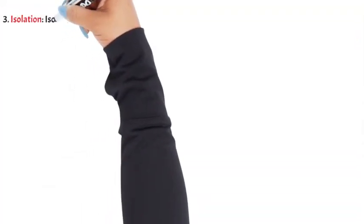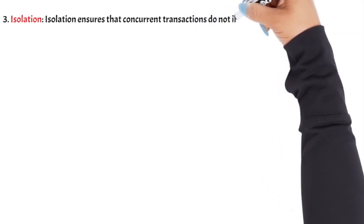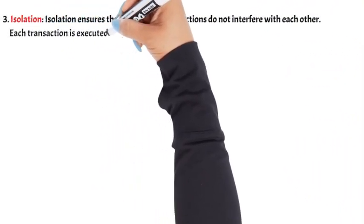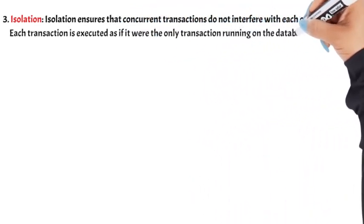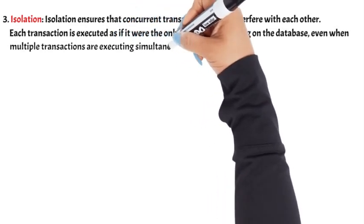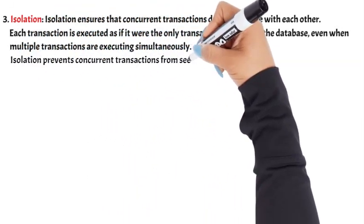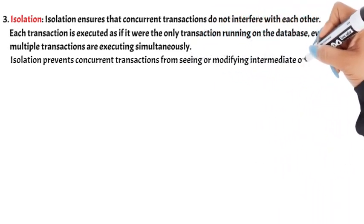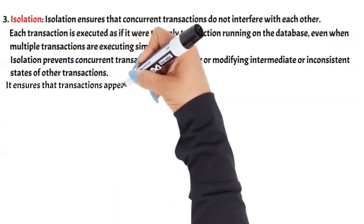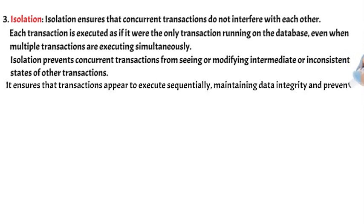Isolation. Isolation ensures that concurrent transactions do not interfere with each other. Each transaction is executed as if it were the only transaction running on the database, even when multiple transactions are executing simultaneously. Isolation prevents concurrent transactions from seeing or modifying intermediate or inconsistent states of other transactions. It ensures that transactions appear to execute sequentially, maintaining data integrity and preventing conflicts.